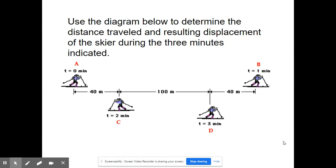All right, here's another one. Use the diagram below to determine the distance traveled and resulting displacement of the skier during the three minutes indicated. So goes from A to B, figure out the distance. B to C, figure out the distance. C to D, figure out the distance. And then you're going to add them all together.